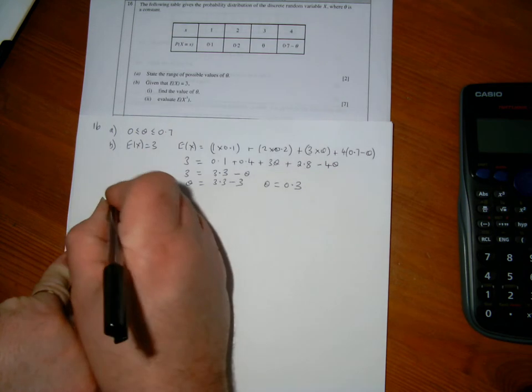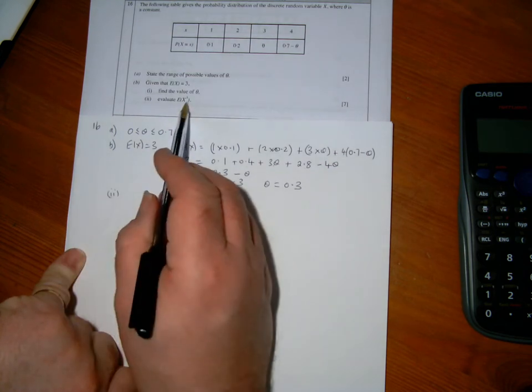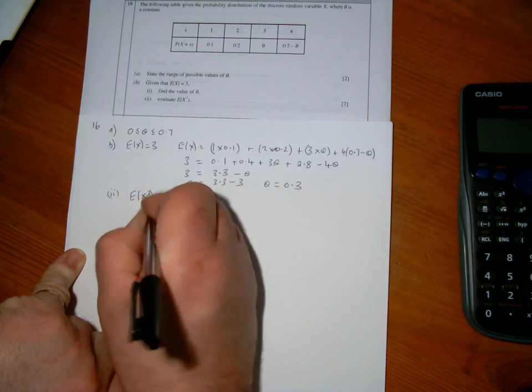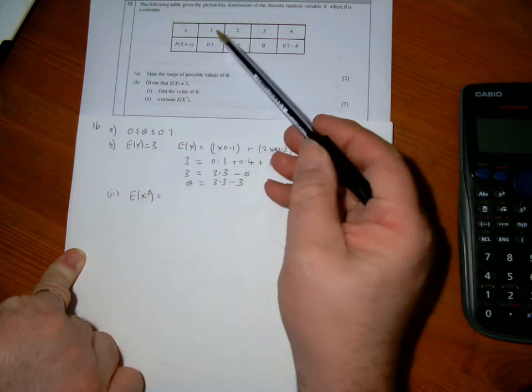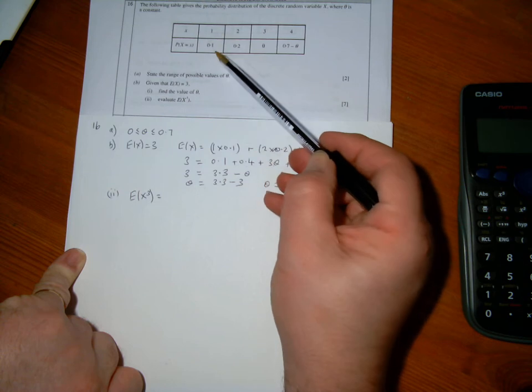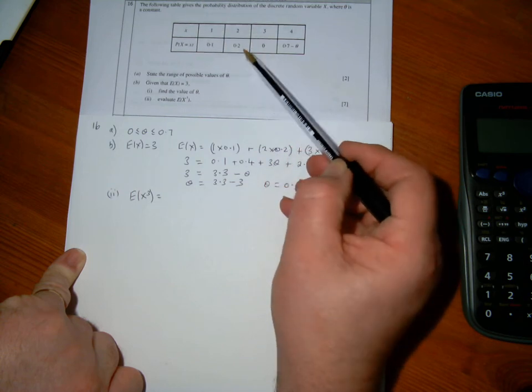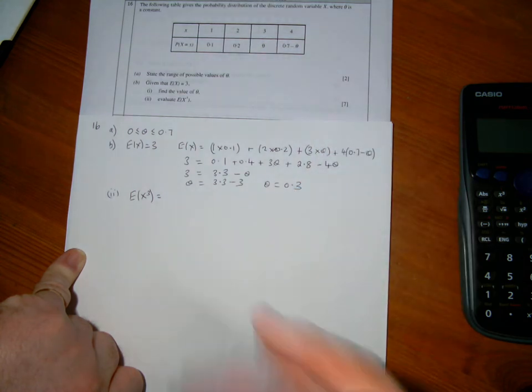Second part, E(X³). So to work out E(X³), I cube the x value and times it by its probability, and so on throughout the table.